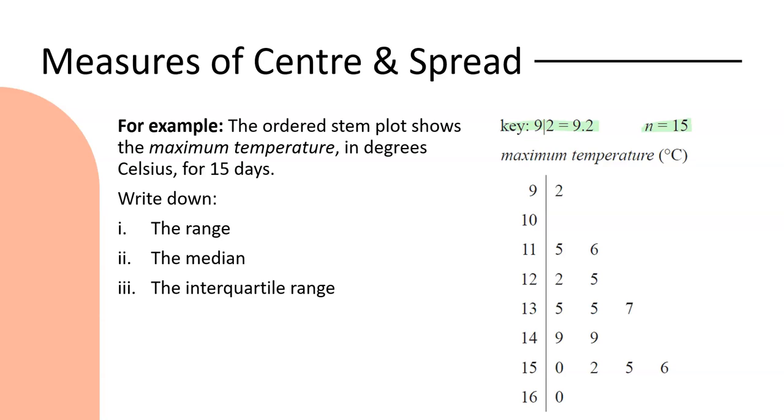So firstly we want to find the range and remembering that my range is given as my maximum value minus my minimum value. And so for the data set here I've got a maximum of 16 and a minimum of 9.2. So when I do 16 minus 9.2 I end up with a range of 6.8 degrees Celsius.